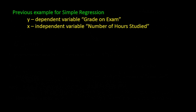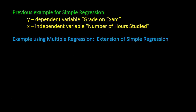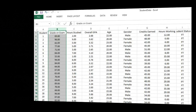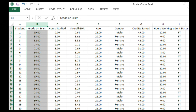In my previous tutorial on simple regression, I used grades as the dependent variable and number of hours studied as the independent variable. Now let's extend that same example to include more independent variables. I will still use grade on exam as my y dependent variable, but let's see if I can incorporate more independent variables to get a better prediction model.